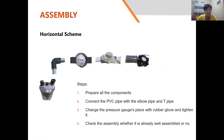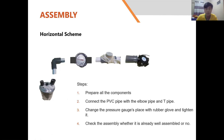The next session covers the assembly. For the horizontal scheme, the steps are: first, prepare all components; second, connect the PVC pipes with the elbow pipes and T-pipes, and install the thermometer, pressure gauge, and generator. However, because the pressure gauge cannot measure the pressure inside the pipe, we replaced it with rubber gloves to check whether pressure occurs inside the pipe. The last step is to check that the assembly is well assembled.